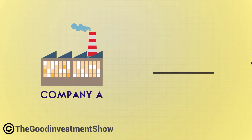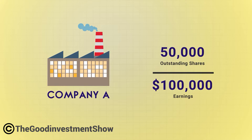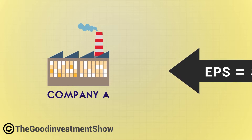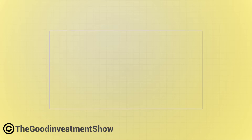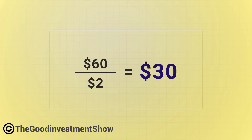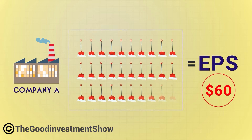Because Company A has 50,000 outstanding shares and $100,000 in earnings, each share has a claim on an EPS of $2. Now that we have Company A's EPS, we can calculate the P-to-E ratio. At a price of $60 per share and an EPS of $2, Company A's P-to-E ratio is 30. This means its stock is trading at 30 times its earnings per share.